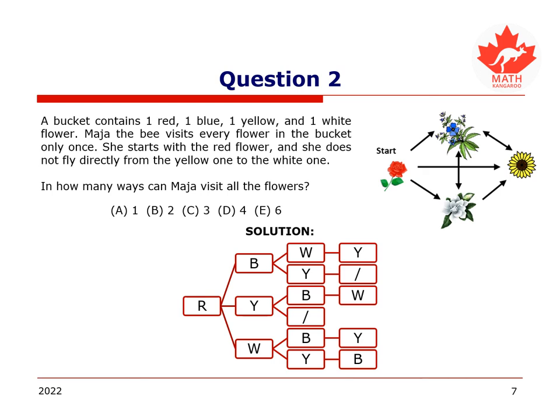We introduce the notation R for red, B for blue, Y for yellow, and W for white. We can list all the possibilities in this tree on this slide.